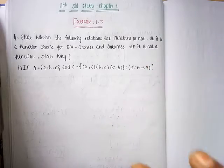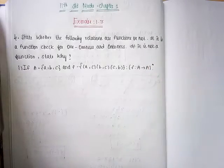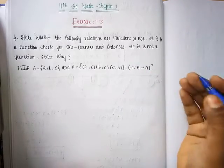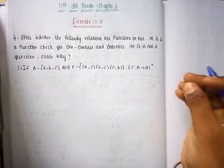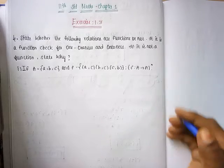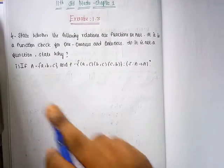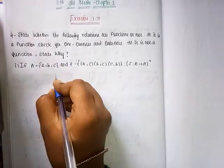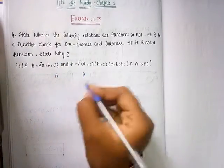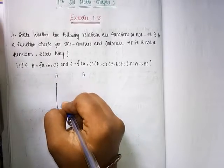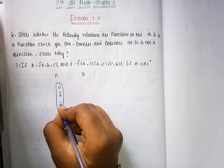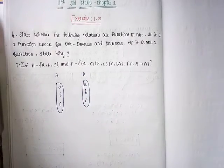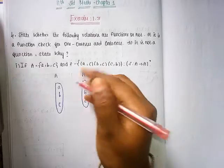First check: every element in the domain must have exactly one image in the co-domain. If every element has one and only one map, then it is a function. So, checking each element — this is a function.